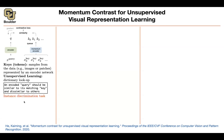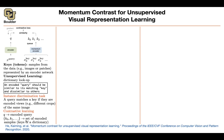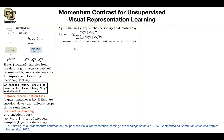Then you are going to do an instance discrimination task. A query is going to match a key — a query is going to match one of these keys, which are perhaps coming out of different crops of your images. If the query and the key are encoded views of the same image, then you say that my query is matching the key. For contrastive learning, you have your encoded query and a set of encoded samples — this is a dictionary of keys. There is a single positive key in the dictionary that matches your query, which is the correct answer, and you want to increase the probability of the query matching its corresponding key.